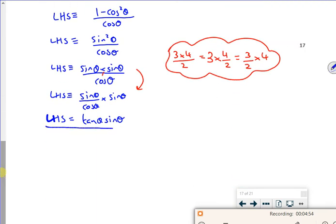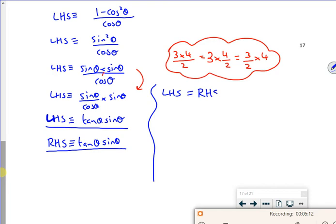Now this has now got me to my left hand side as being tan theta, sin theta, which is what I've got on the right hand side. If I'm doing this properly, really full on properly, I should then say that the right hand side is tan theta sin theta. So what I've got here then is the left hand side is equal to the right hand side.